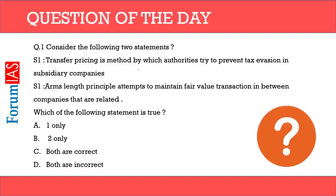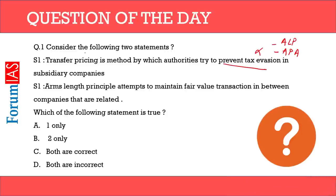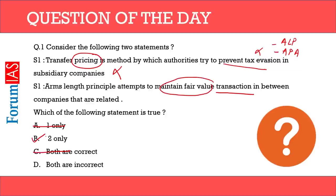Now let's answer the quiz. Statement 1: Transfer pricing is the method by which authorities try to prevent tax evasion in subsidiary companies. This is wrong — transfer pricing is not a method to prevent tax evasion; it is the manipulation itself. It is the Arms Length Principle and the Advanced Pricing Agreement that prevent tax evasion. Statement 2: The Arms Length Principle attempts to maintain fair value transactions between related companies. This is correct — we saw that related company transactions needed fair value pricing, and the Arms Length Principle ensures that.